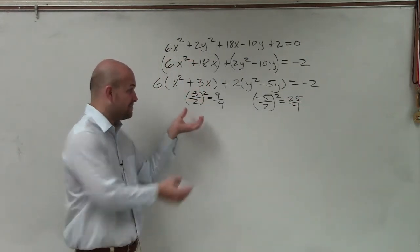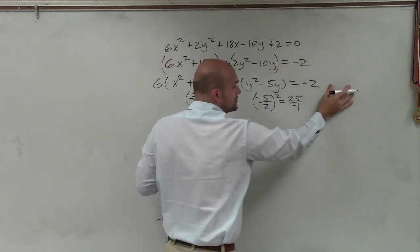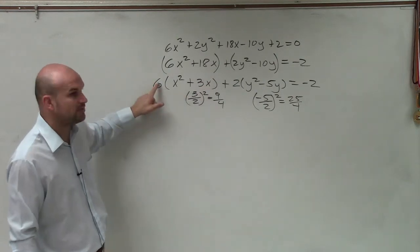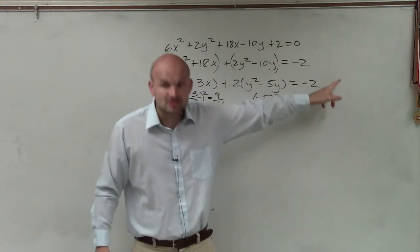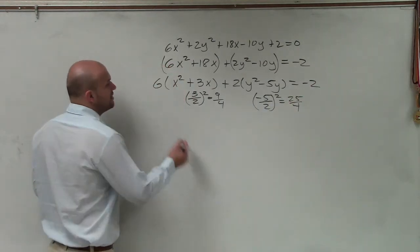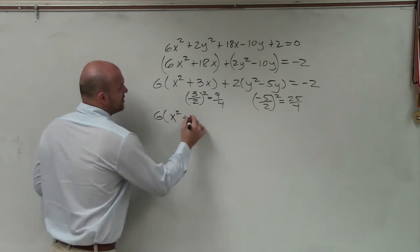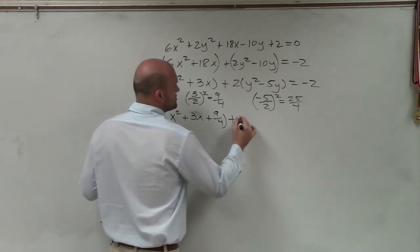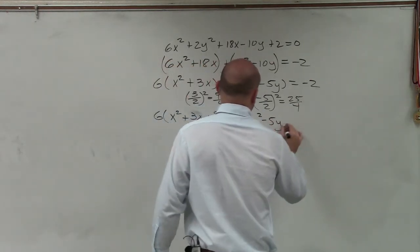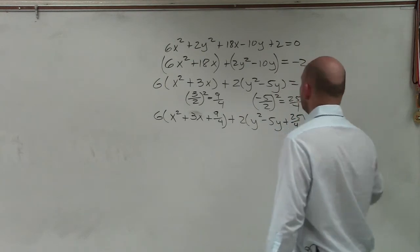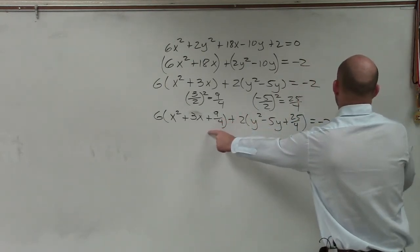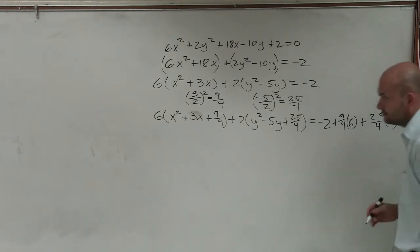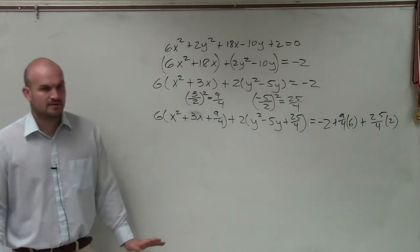Now, I make sure I add them within the parentheses, but also over to the right side. But remember, since I've factored out a number, when I add 9 fourths inside this parentheses, that 9 fourths is being multiplied by 6. So when I add it to the right side, I also have to multiply it by 6. Very, very important point that a lot of students forget. So 6 times x squared plus 3x plus 9 over 4 plus 2 times y squared minus 5y plus 25 over 4 equals negative 2. Then I have to add 9 fourths times 6 plus 25 over 4 times 2. Does everybody feel OK with how I got that?